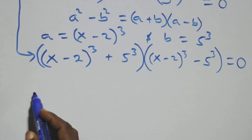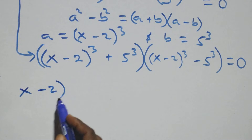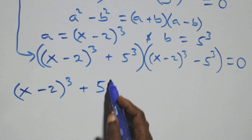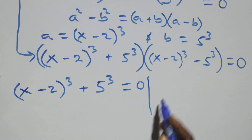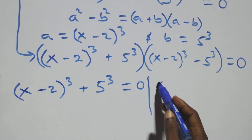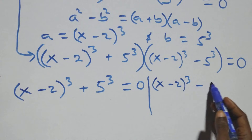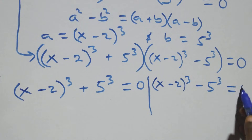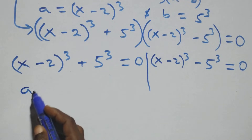We now have two possible cases. The first case: (x-2)³ plus 5³ equals 0. The second case: (x-2)³ minus 5³ equals 0.